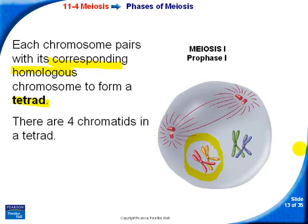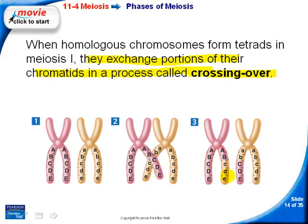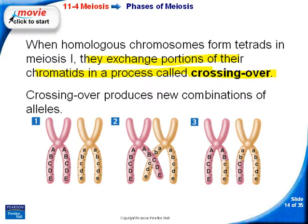When homologous chromosomes form a tetrad, they exchange portions of their chromatids in a process called crossing over. If each letter represents a section of a chromatid, they exchange the portion that codes for the same thing. So if one chromosome is from mom and one is from dad, when they cross over, one section swaps, and you end up with chromosomes that are slightly different. This produces new combinations of alleles.